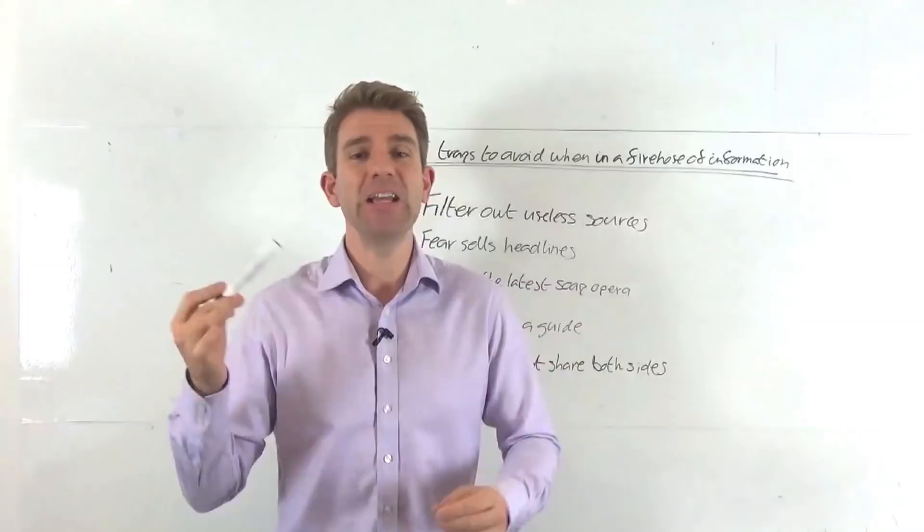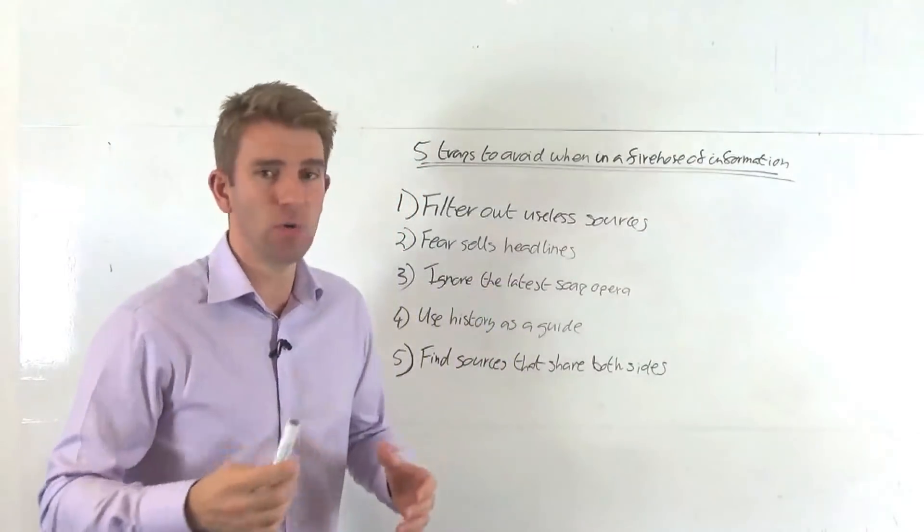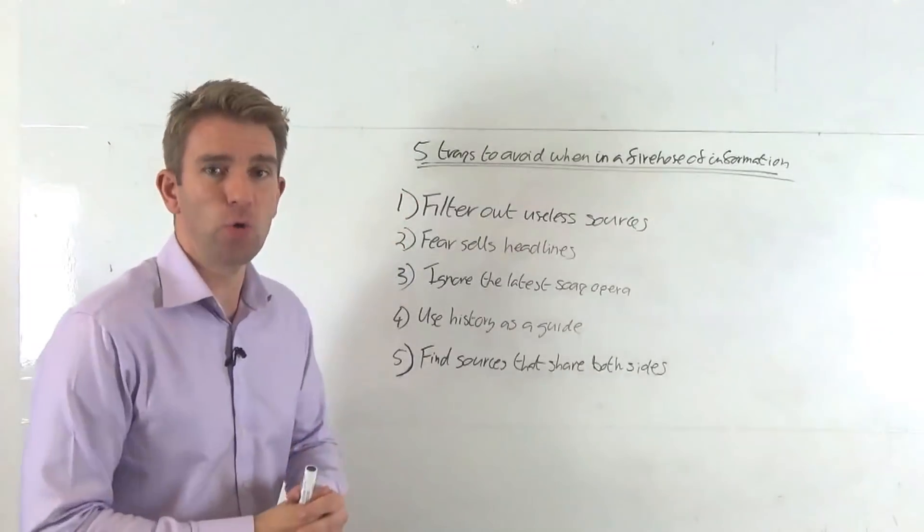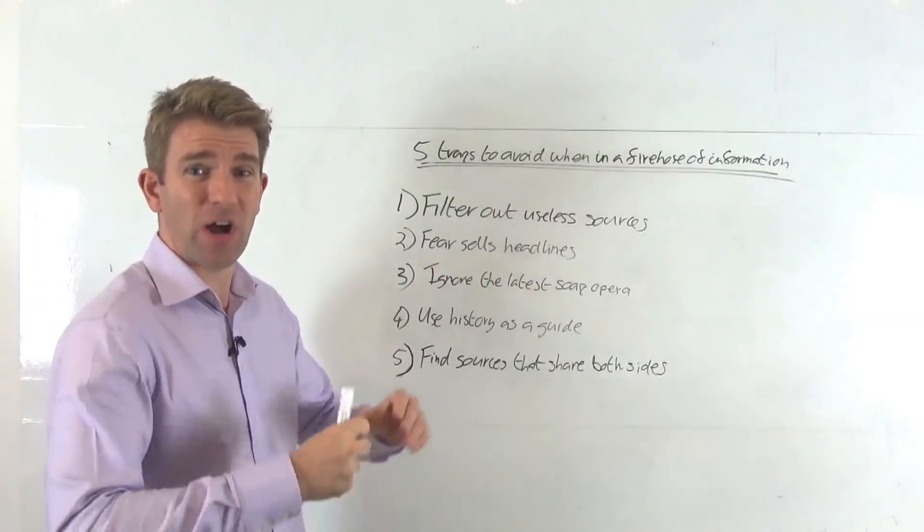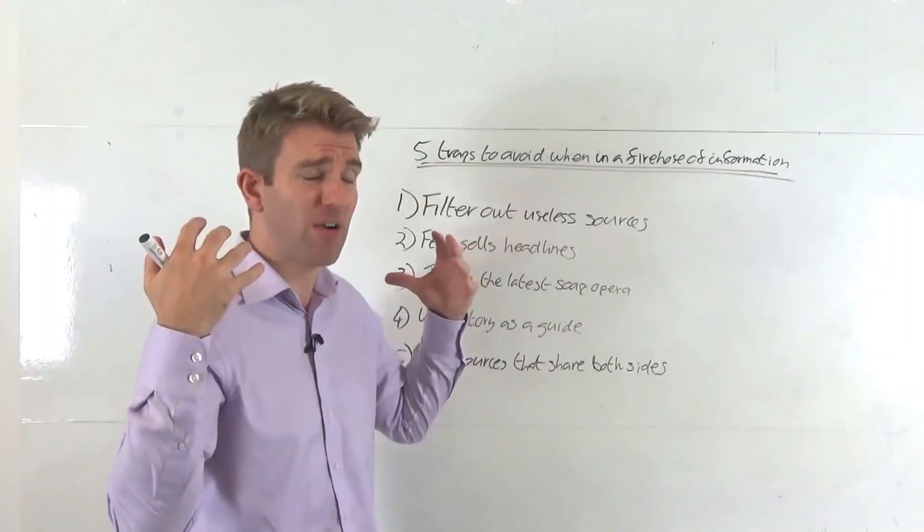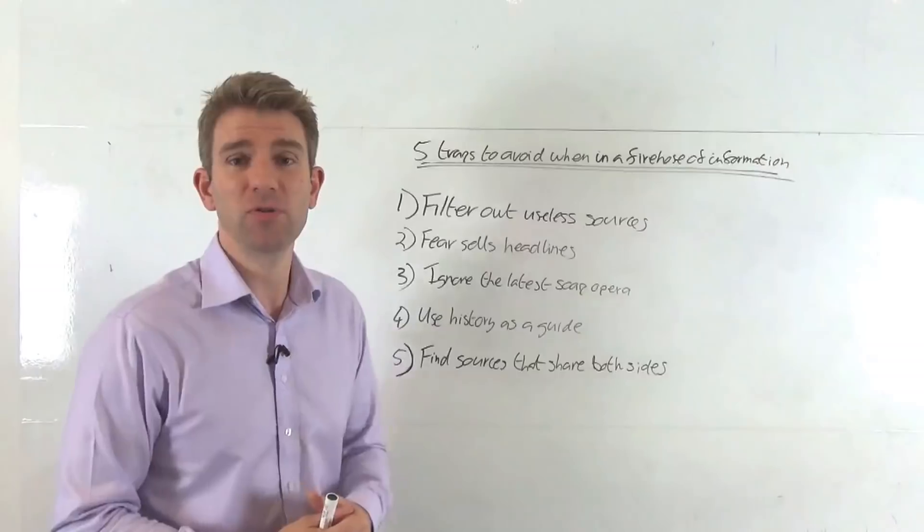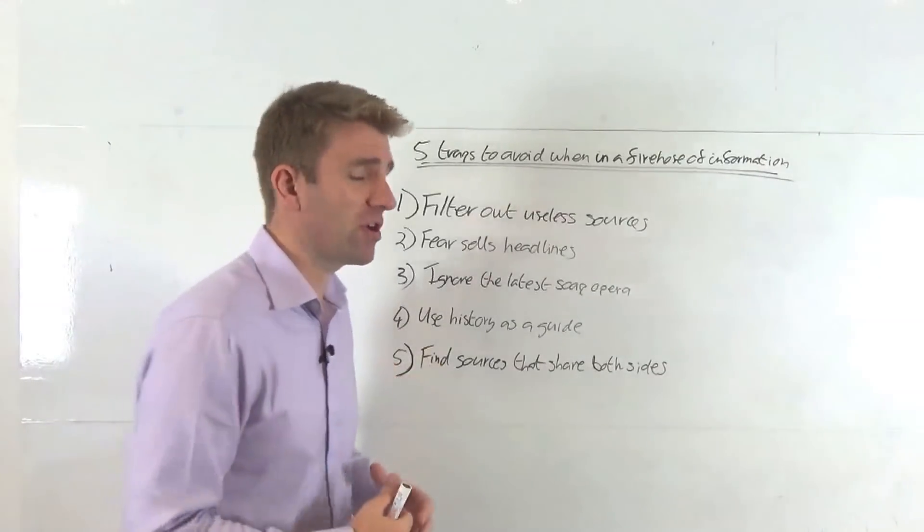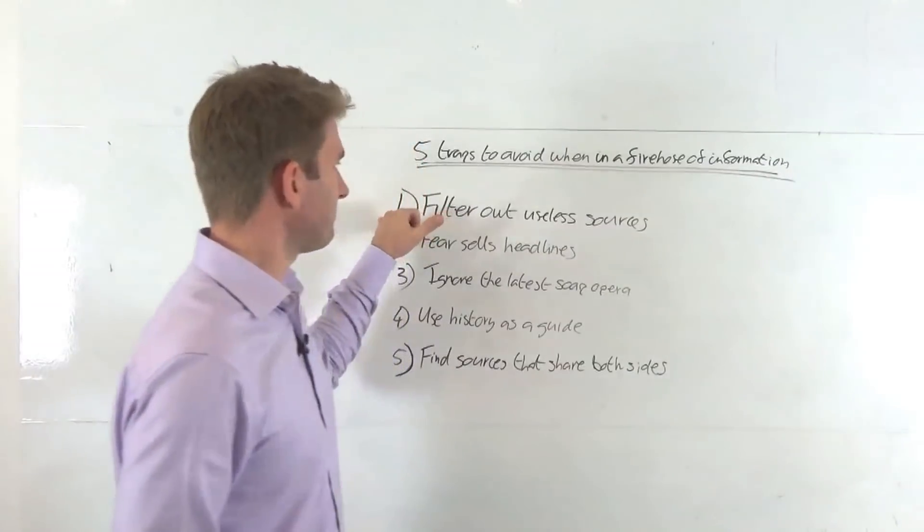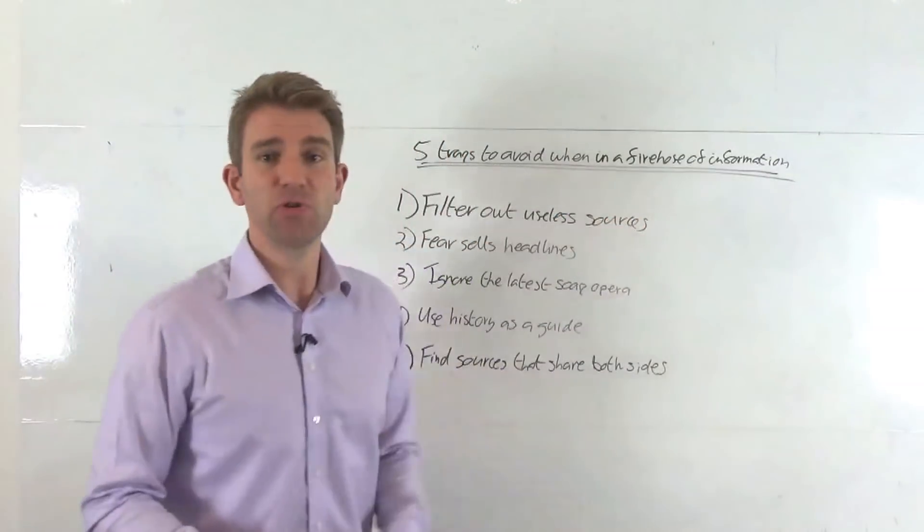Whereas now we have gone full circle. We now have so much news, so much information at our fingertips, it's become a problem in itself. So five traps to avoid when in a fire hose of information. What I mean by a fire hose is when you've got so much information firing at you that you don't know what to do. You've got to dial it down and work out what's good and what's not.